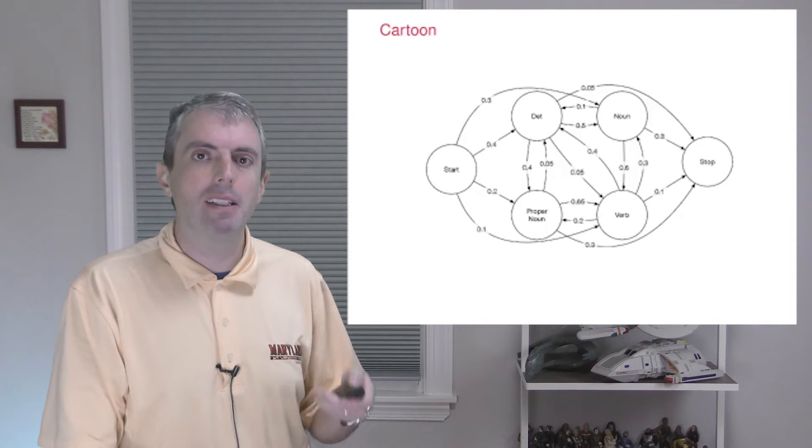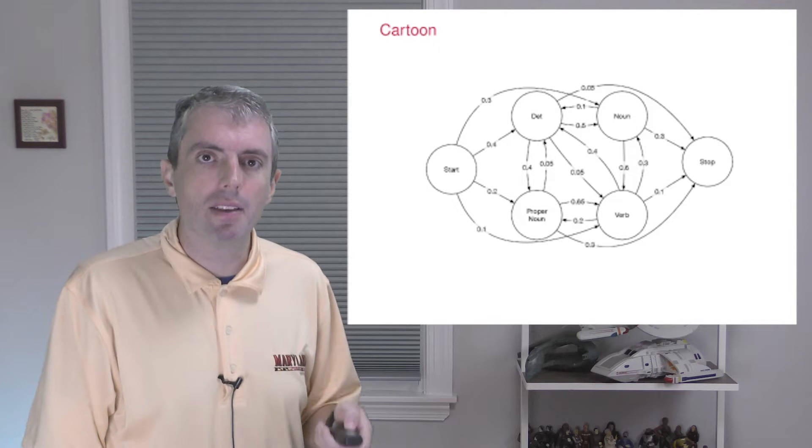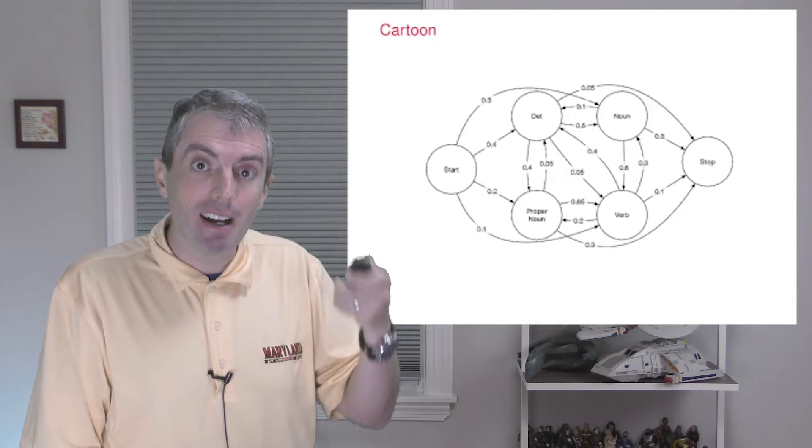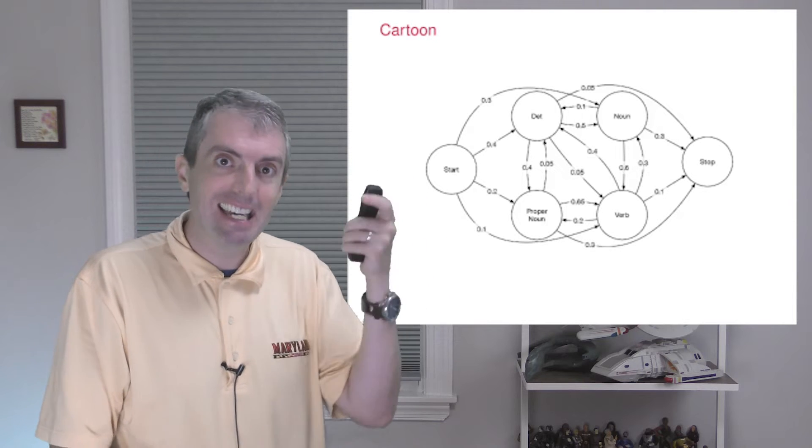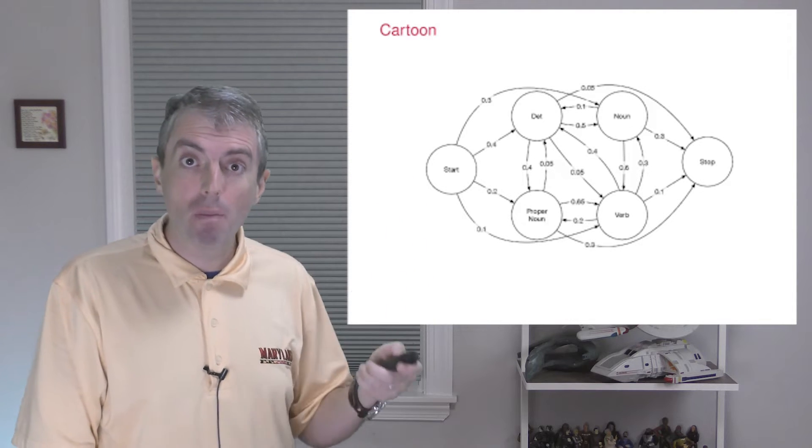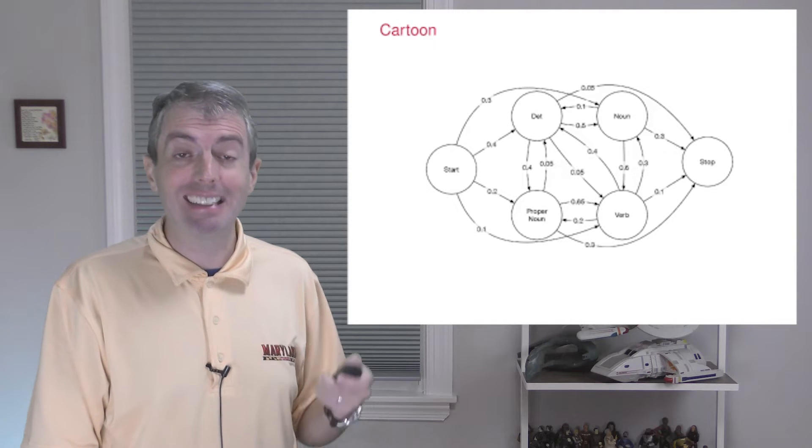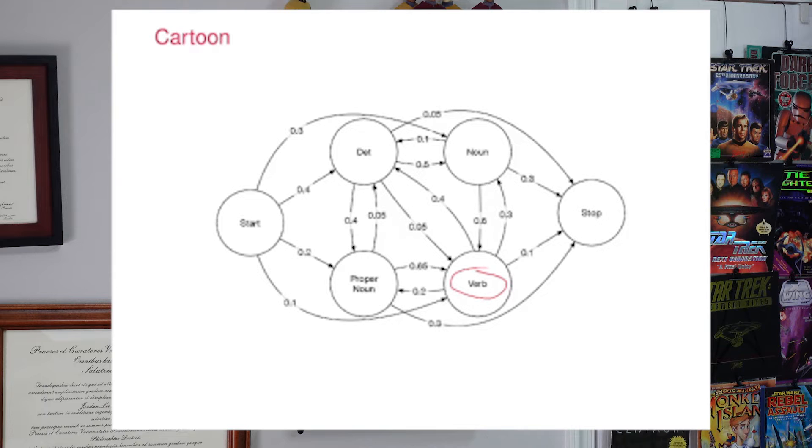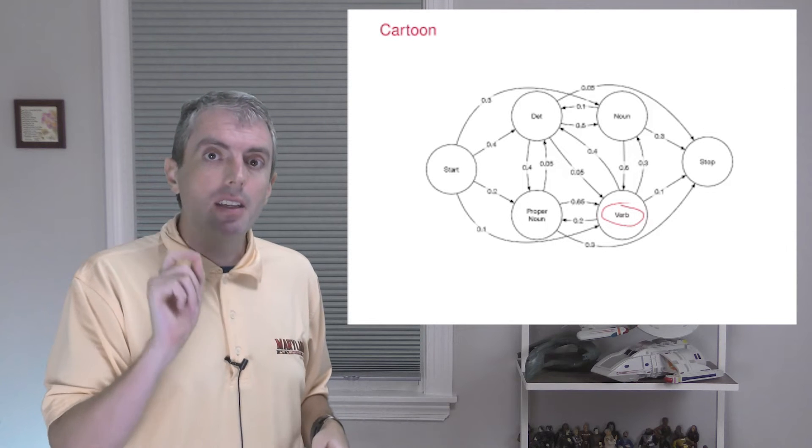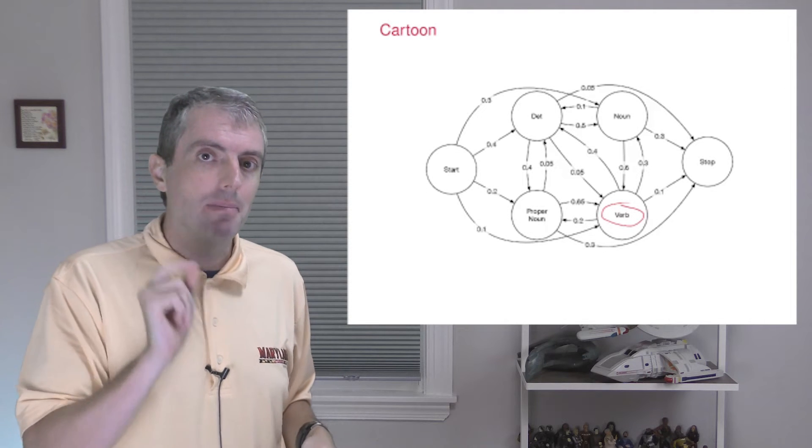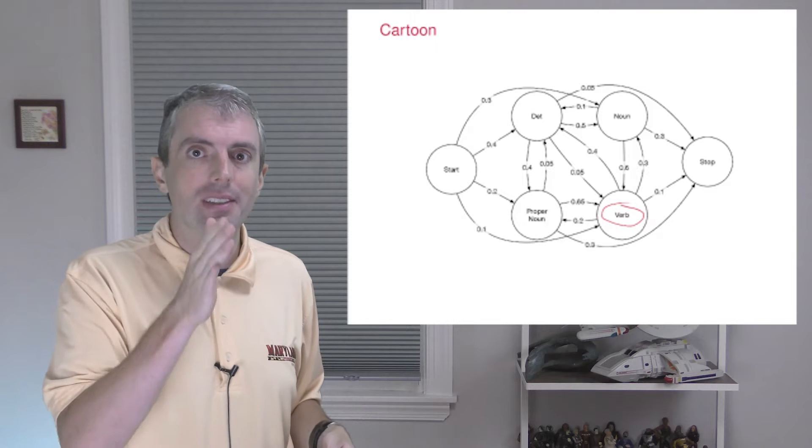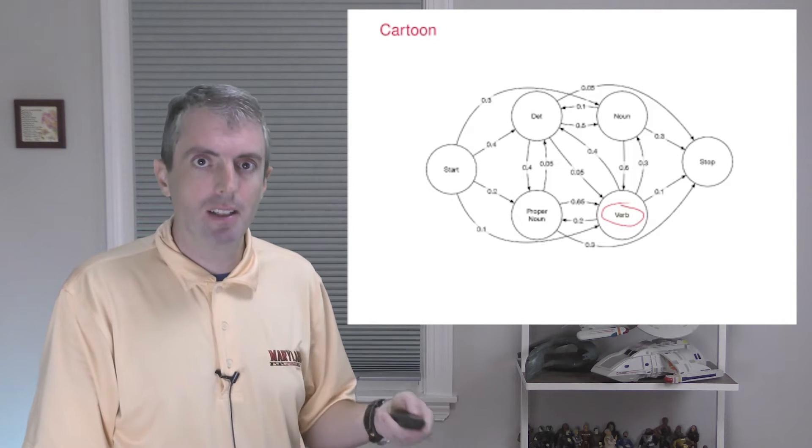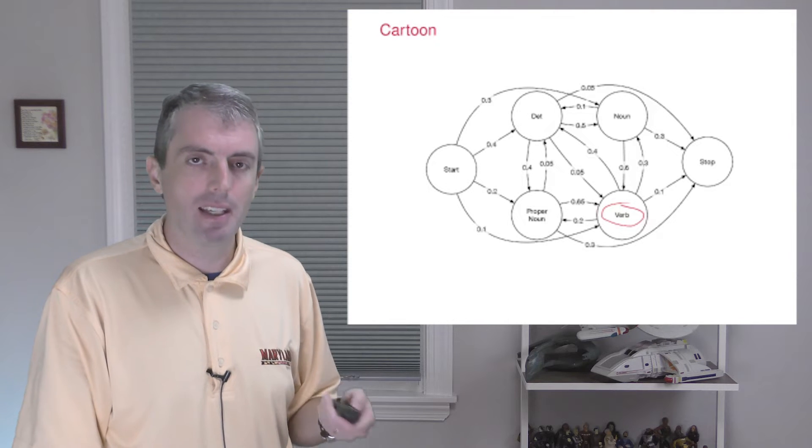The transition probabilities are the probability of going to another state given the current state that you're in. Again, it only depends on the current state. That's the Markov assumption. So once you're in the verb state, you can forget about exactly how you got there. Unless I screwed something up, let me know in the comments if I did. All of the edges coming out of a state should add up to one, and hopefully you can see how to go from state to state. Start at start, pick a next state, rinse and repeat.